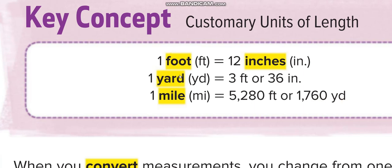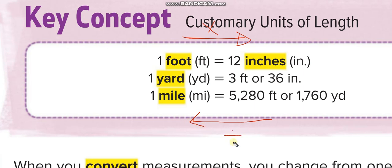These units all measure length. One foot equals 12 inches; one yard equals three feet or 36 inches; one mile equals five thousand two hundred eighty feet or one thousand seven hundred sixty yards. Keep this in mind: when moving from a larger unit to a smaller one, you multiply. When moving from a smaller one to a larger one, you divide.